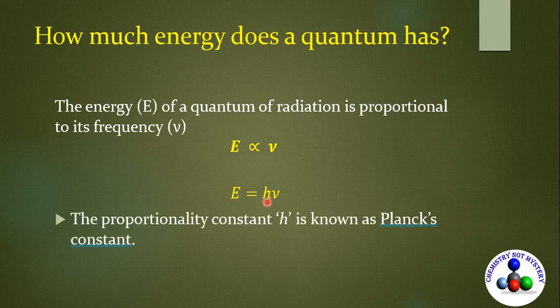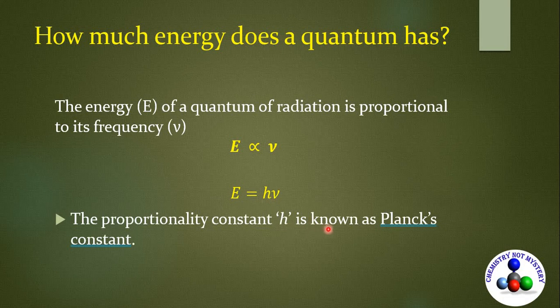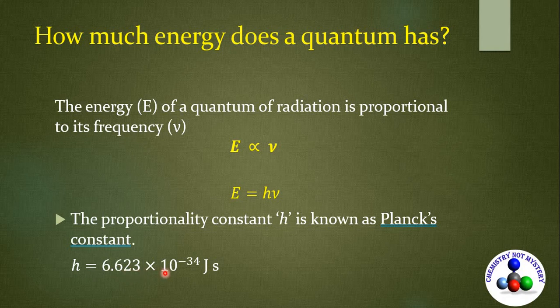Here, proportionality constant h is known as Planck's constant and its value is 6.623 × 10⁻³⁴ joule-seconds.